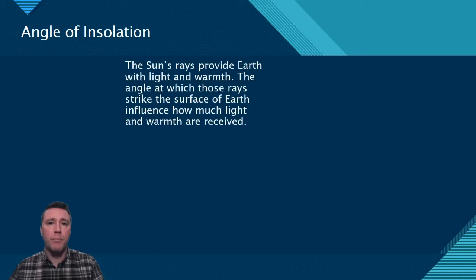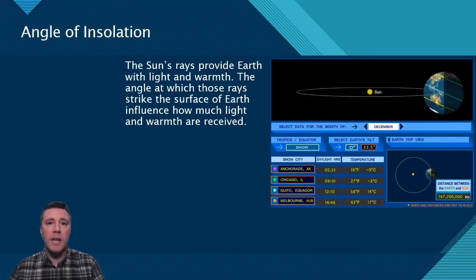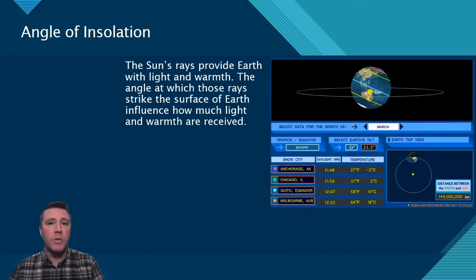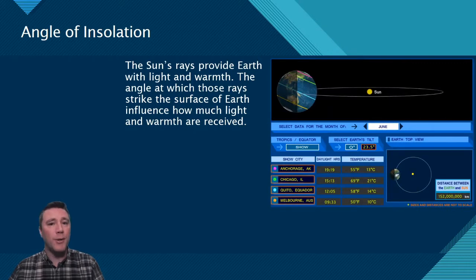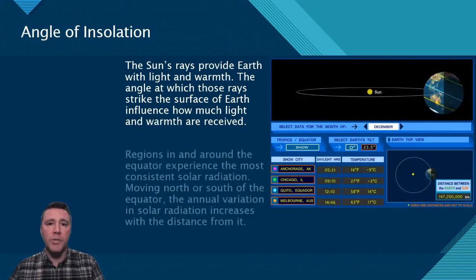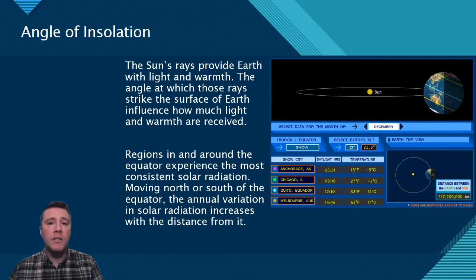Incoming solar radiation provides both light and warmth to Earth. It is the angle at which those incoming solar rays strike the Earth that influences how much light and warmth is received. In December, the sun's rays are closer to perpendicular over the southern hemisphere. In March, the sun's rays are perpendicular to the equator. In June, the sun's rays are closer to perpendicular in the northern hemisphere, and then back to perpendicular over the equator again in September. Because equatorial regions receive the most consistent solar radiation, temperature and light availability are relatively uniform throughout the entire year, making possible greater biodiversity in the tropics.